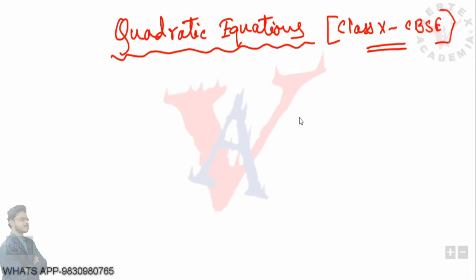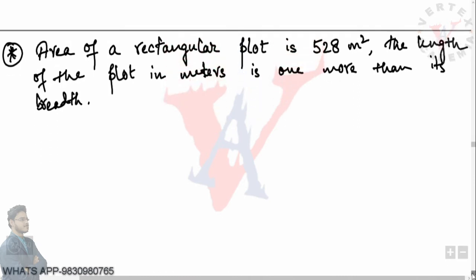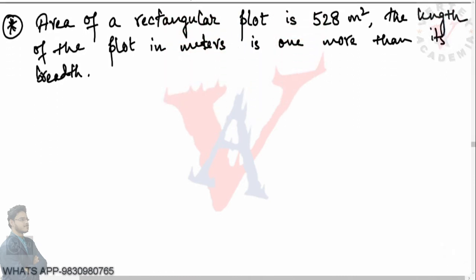Welcome back everyone. Today is the second lecture on quadratic equations, Class 10 CBSE. I will be following NCERT — other board students may also follow these lectures. Today we will be mainly discussing about the formation of quadratic equations. I will take two examples, and after that I think it will be clear for all of you. Basically, we have to write mathematical statements in the form of a quadratic equation — this is what we mean by formation of a quadratic equation.